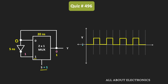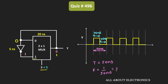As you can see, the output Y is a square wave. The on-time is 25 nanoseconds and the off-time is also 25 nanoseconds, giving a time period T equal to 50 nanoseconds. Therefore, the frequency of the square wave is 1 divided by 50 nanoseconds, which equals 20 MHz. So for this given logic circuit, the output Y is a square wave of 20 MHz.